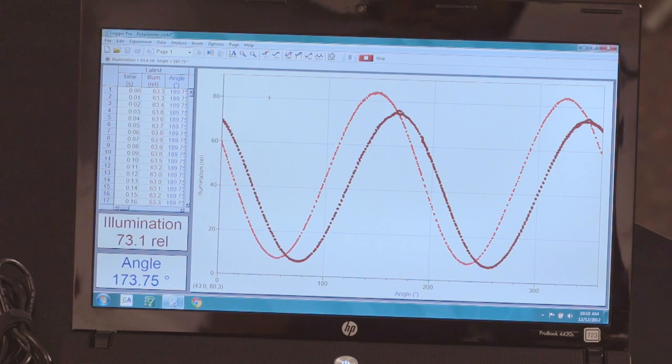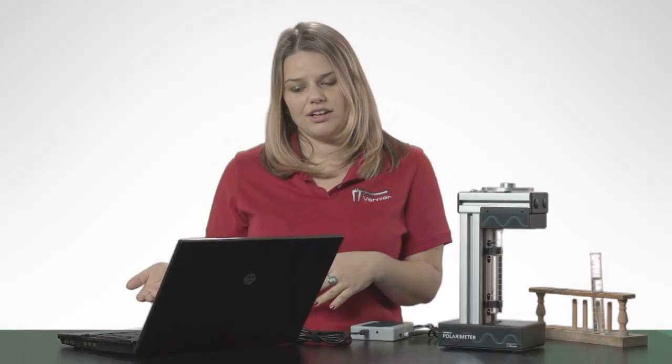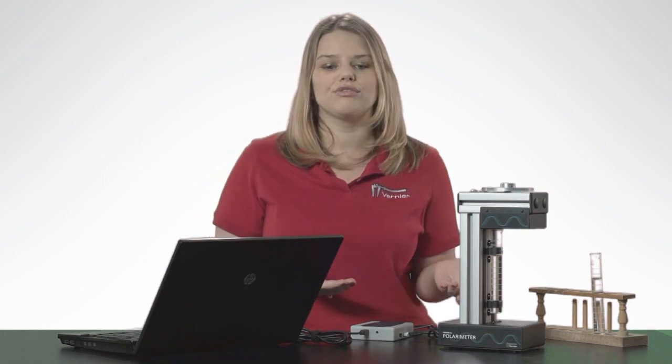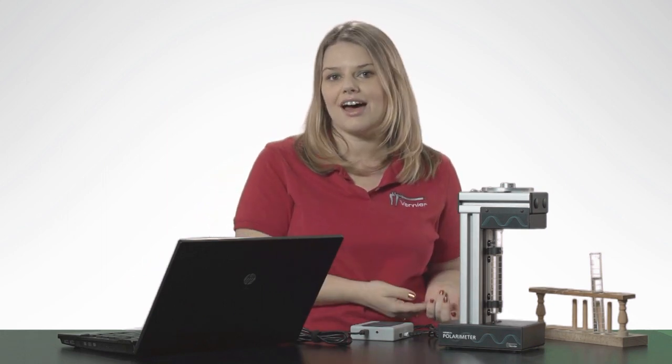You can see right away qualitatively that the cosine squared waveform has been shifted to the right. Sucrose is therefore a right-handed molecule. If I had used a negative sugar, like fructose, I would have gotten a shift to the left.